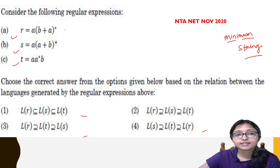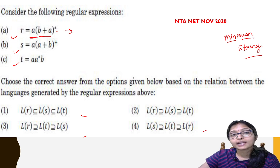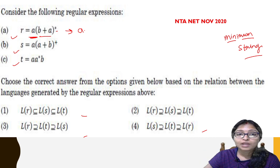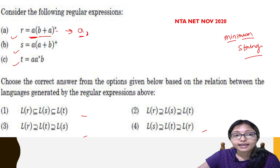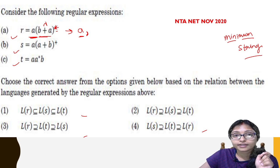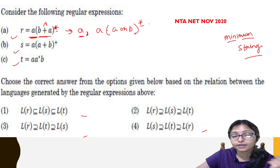For the minimum string, first check that it is 1A — so A is a must. After that B-plus A-star: since the star is there, this part can be lambda, meaning zero occurrences are allowed. So the minimum string is just A. After that, all possible combinations — any combination of A or B can follow because of the star.